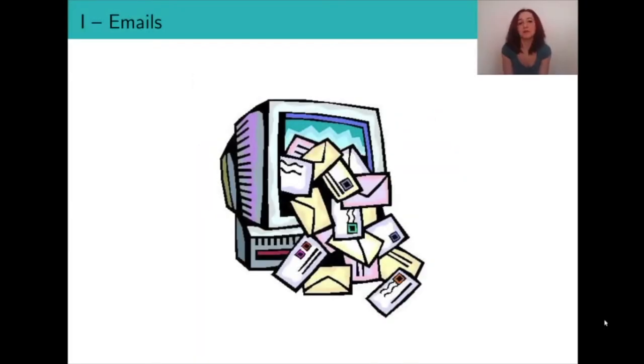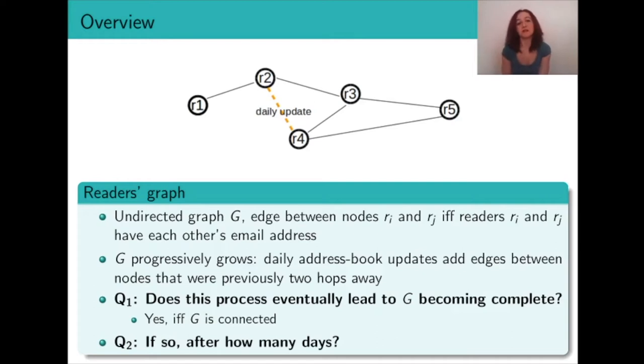Hello everyone and here's a few words about the problem called emails. The first things to notice are that the blog readers form this undirected graph G and that G actually grows with each daily update because these add edges between nodes that were previously two hops away.